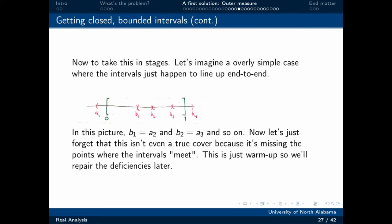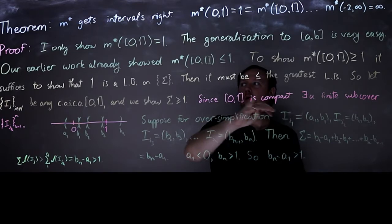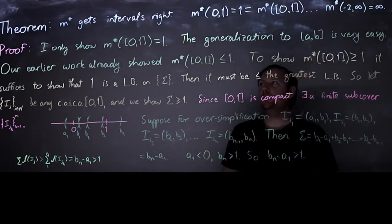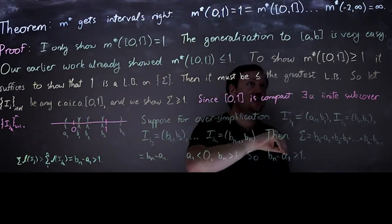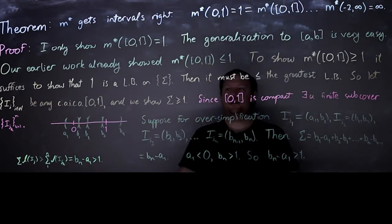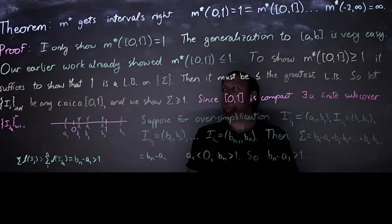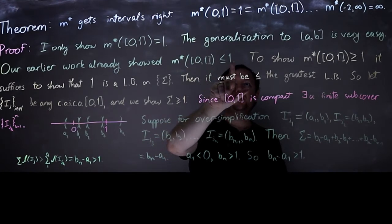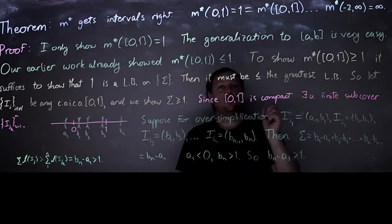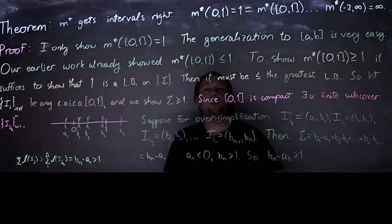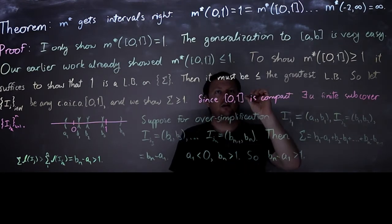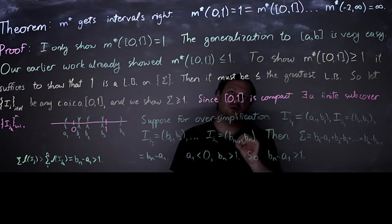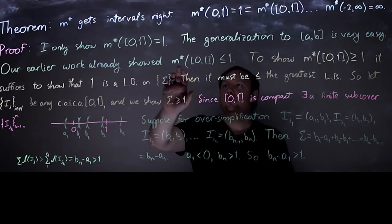We'll get into the proof. I'm not going to show it for every interval — just for the interval [0,1]. The generalization to any interval [a,b] should be an almost identical proof. Notice that our earlier work already showed M* must be less than or equal to 1 for this interval, by the same kind of limit argument: if you picked any number bigger than 1, it cannot be a lower bound on the set of overestimates because one of our covers would have an overestimate smaller than that number. So M* must be less than or equal to 1.